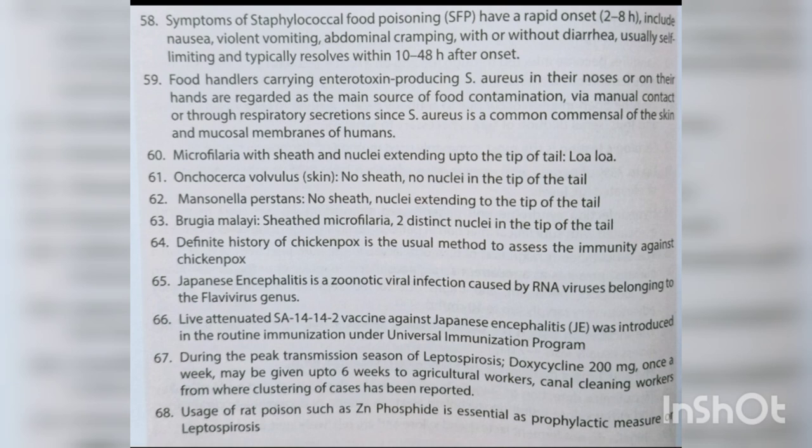Microfilaria with sheath and nuclei extending to the tip: Loa loa. Onchocerca volvulus: no sheath, no nuclei in the tail tip. Mansonella perstans: no sheath, nuclei extending to the tail tip. Brugia malayi: sheathed microfilaria with two distinct nuclei in the tail tip. Definite history of chickenpox is the usual method to assess immunity against chickenpox.